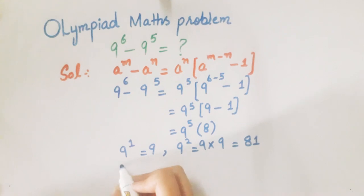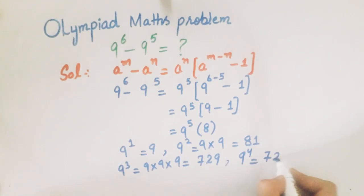9^3 = 81 × 9 = 729. Then 9^4 = 729 × 9 = 6561.